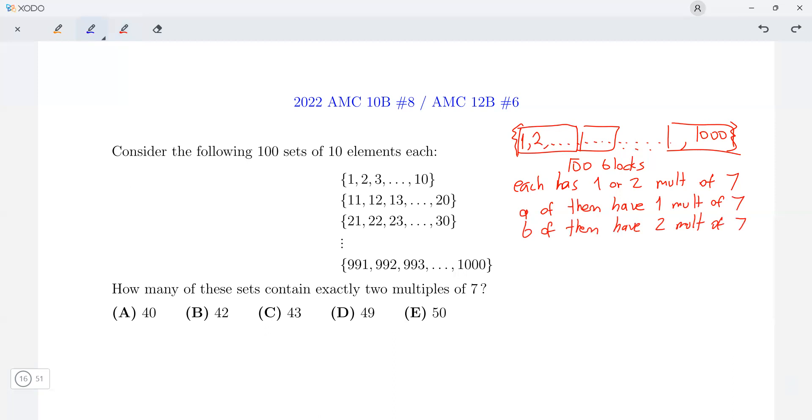So what relations do we have between a and b? Well, since a and b constitute all the blocks, there are 100 of them. So a plus b equals 100.